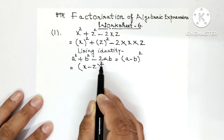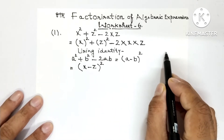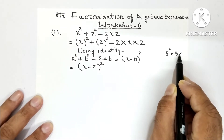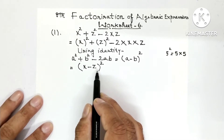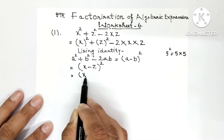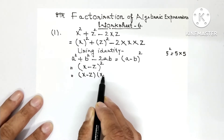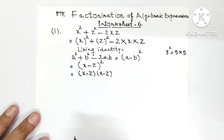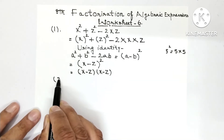This identity gives (a-b)², so here a is x and b is z. Therefore the answer is (x-z)². Just as 5² could be written as 5×5, similarly (x-z)² is written as (x-z)(x-z). So this was Question 1. Now we do Question 2.